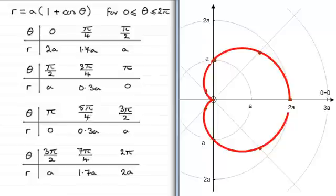Okay, well I hope that's given you some idea then how we go about plotting this particular curve. And it's called a cardioid then and hopefully you can see why. It's got this kind of heart shape. And it's symmetrical about the line theta equals zero, our initial line.